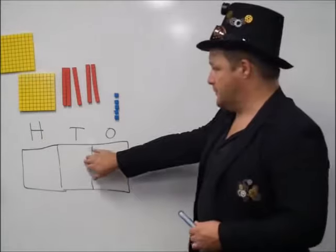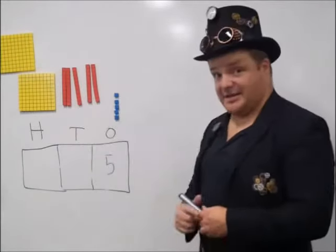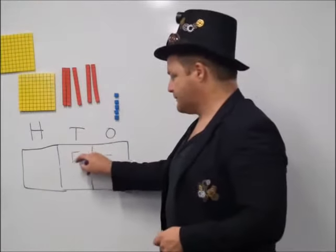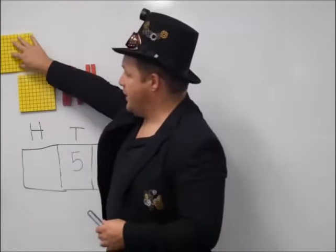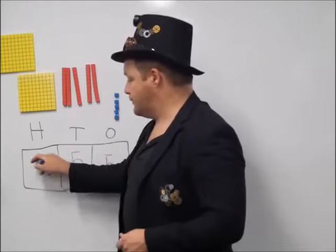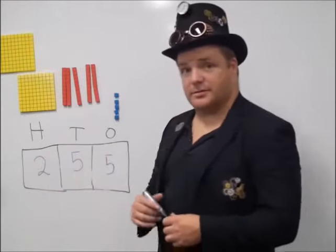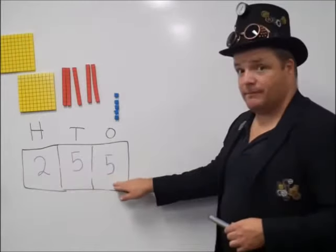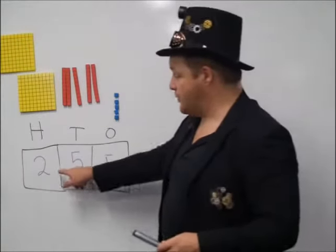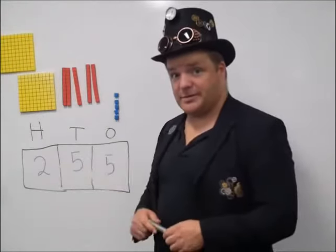Okay, tens. And I go one, two, three, four, five tens. And I put five in the tens column. I have one hundred, two hundred. So I have two hundreds. Okay, two hundred and fifty-five. Don't make the mistake of writing two hundred in here, because that's not how we do this one.